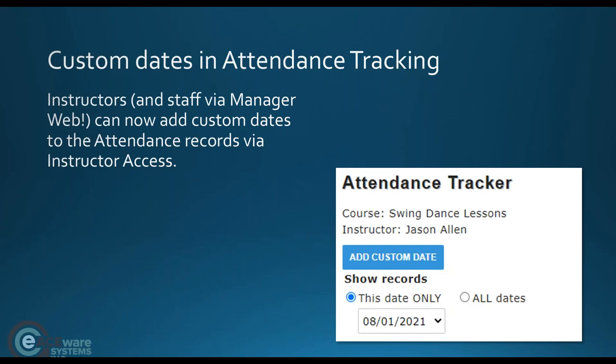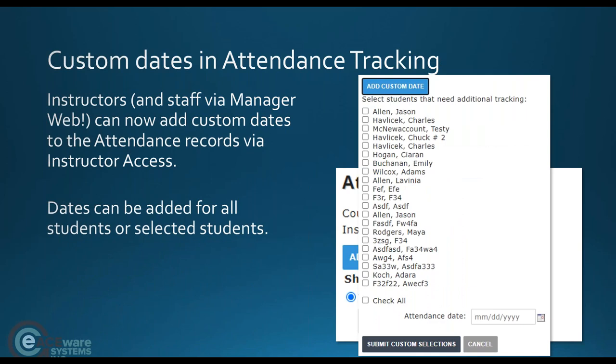Custom dates in attendance tracking: this gives instructors the ability via instructor access to add a custom date to their attendance records — for example, an inclement weather makeup day. When they click the 'Add Custom Date' button, they can select one student, multiple students, or all students, enter the date, and click Submit. This saves staff from having to do that manually.